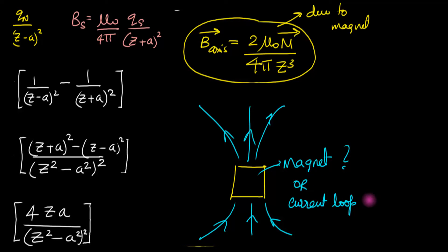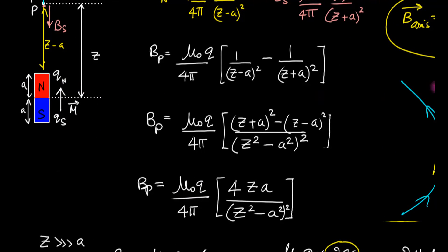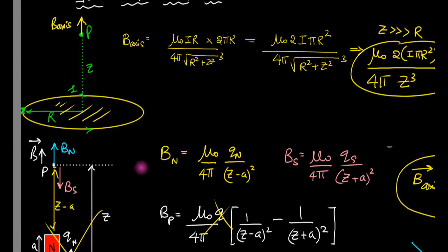So a magnet and a current-carrying loop give identical results — in other words, they are the same thing. If you had a box producing this magnetic field and asked what's inside, it could be a magnet or a current-carrying loop. The mystery is solved: inside a magnet is a current-carrying loop. That is the secret of a magnet.